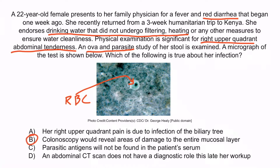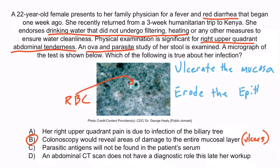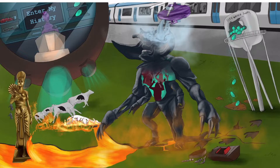With that in mind, the correct answer is B: colonoscopy would reveal areas of damage to the entire mucosal layer. This is merely describing ulcers. Recall from our gastrointestinal anatomy chapter that ulcers damage the entire mucosa, while erosions damage only the epithelial layer. We remember this from the phrase 'ulcerate the mucosa and erode the epithelium' — ulcerate has a U and mucosa has a U, and erode and epithelium both have an E. So areas of damage to the entire mucosal layer is consistent with ulcers. Recall the monster's footprints in the ground represent ulcerations of the intestinal mucosa.